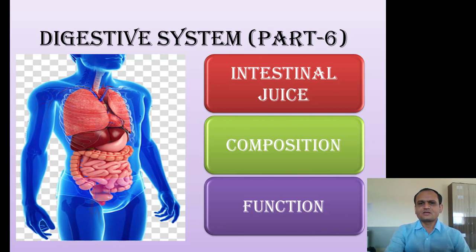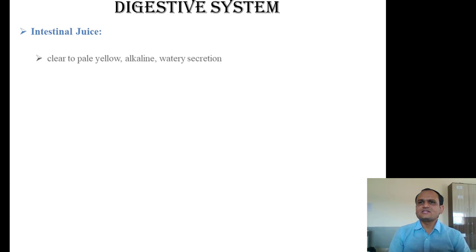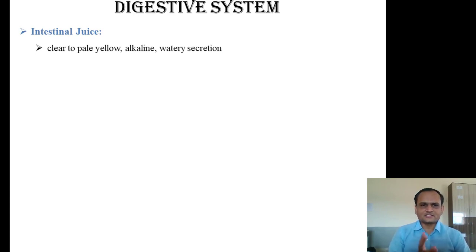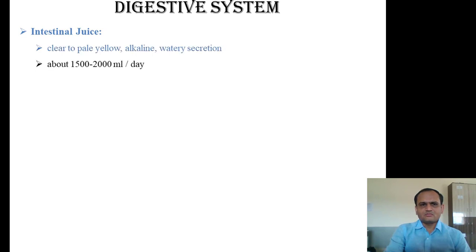Now let us study the composition and functions of intestinal juice. In terms of appearance, it is clear to pale yellow, alkaline in nature with a pH greater than 8, and is a watery secretion. About 1500 ml to 2000 ml of intestinal juice is secreted per day by the intestinal glands into the lumen.